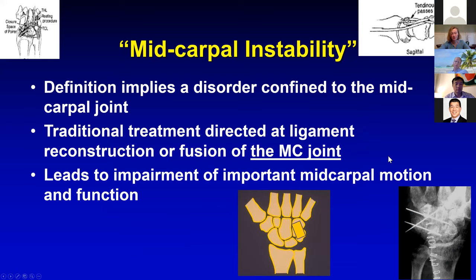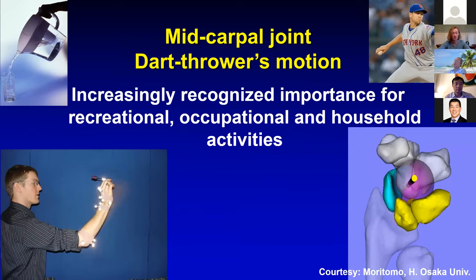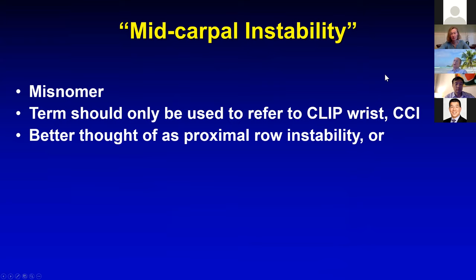The traditional treatment of mid-carpal instability has been to fuse or reconstruct the mid-carpal joint. But fusing across the mid-carpal joint leads to impairment of important mid-carpal joint function and motion. The mid-carpal joint is responsible for the dart-throwing motion, increasingly recognized for recreational, occupational, and household activities. Hesham Muratomo's video shows the motion occurring around essentially a spherical mid-carpal joint. Mid-carpal instability is a misnomer — the term should only be used to describe CLIP wrist.